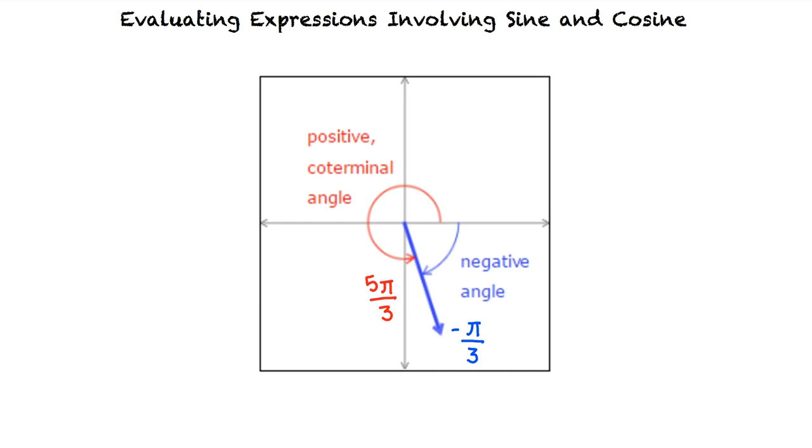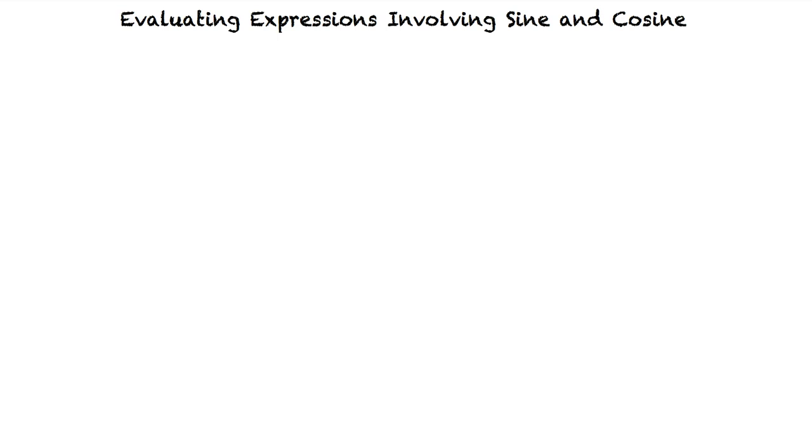Let's try a couple example problems. If θ equals 4π/3, let's find the exact values of 2 cosine θ, cosine squared θ, and cosine θ over 2.